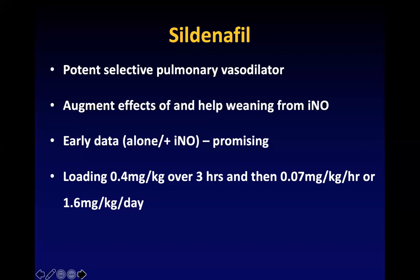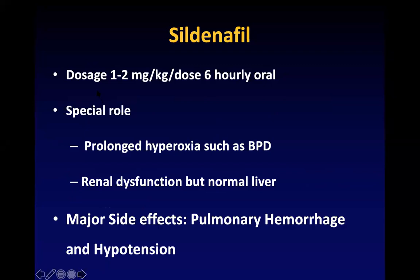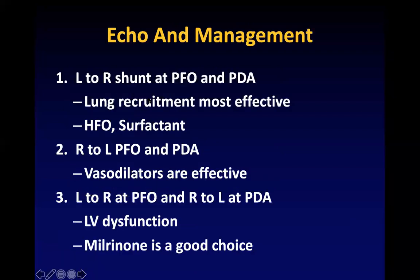Sildenafil is a potent pulmonary vasodilator. It augments the effect of iNO and is useful when weaning off iNO is a problem. The IV loading dose is 0.4 mg/kg over three hours, then a maintenance dose of 0.07 mg/kg/hour or 1.6 mg/kg/day. The oral dose is 1 to 2 mg/kg per dose every 6 hours. It has a special role in prolonged hypoxia, BPD, and when there is renal dysfunction but normal liver function. The major side effect is systemic hypotension — be careful when blood pressures are low.